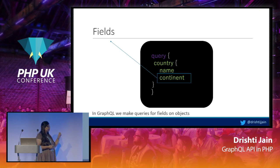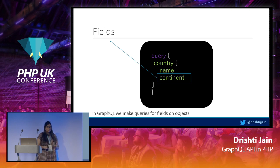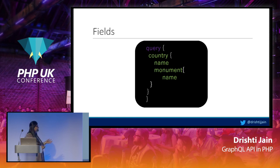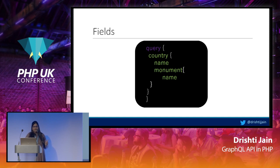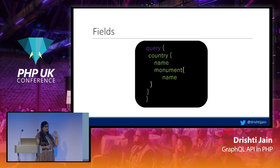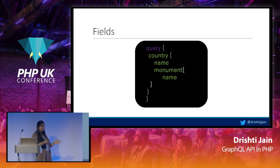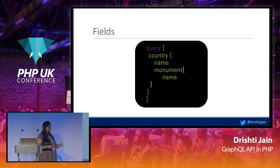Fields can be of scalar type or can have sub-fields. For example, monument as a field could also have a name — that is a non-scalar kind of field in the query. Having objects as fields avoids making multiple requests for related resources. Instead of first getting the list of countries and then firing a query for monuments in each country in two steps, you can directly combine it and do it at once, since monument is related to country.